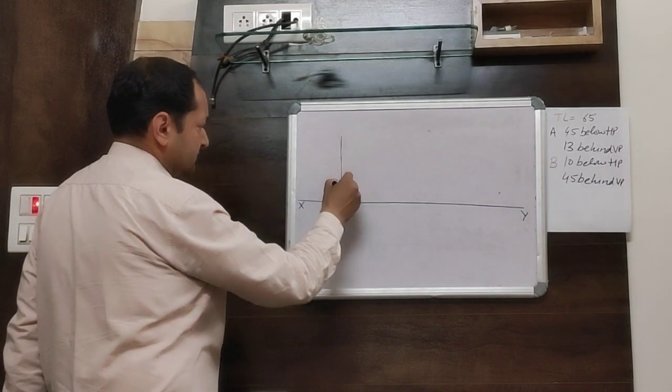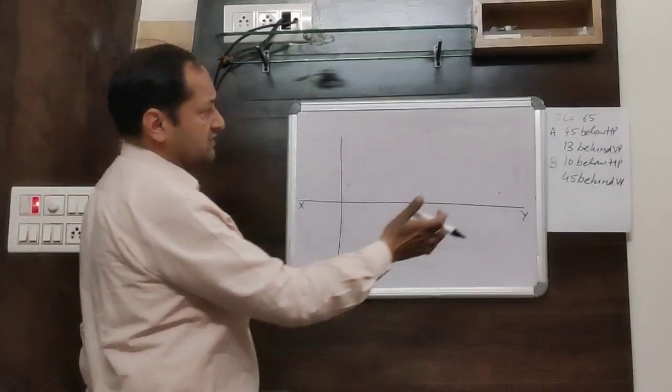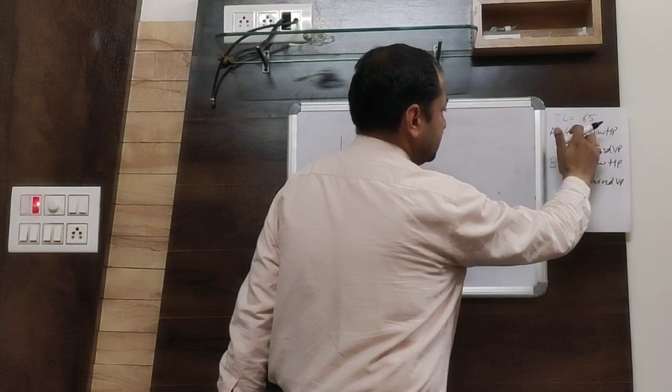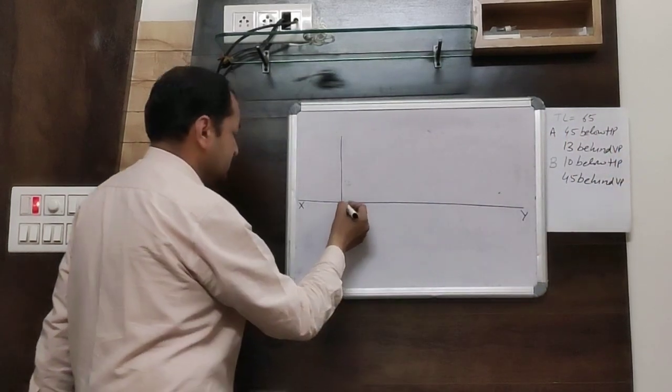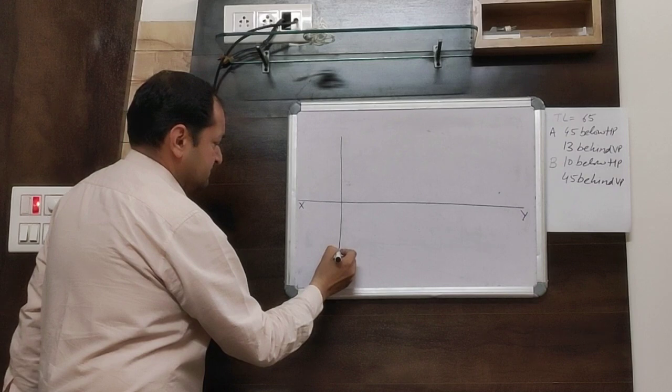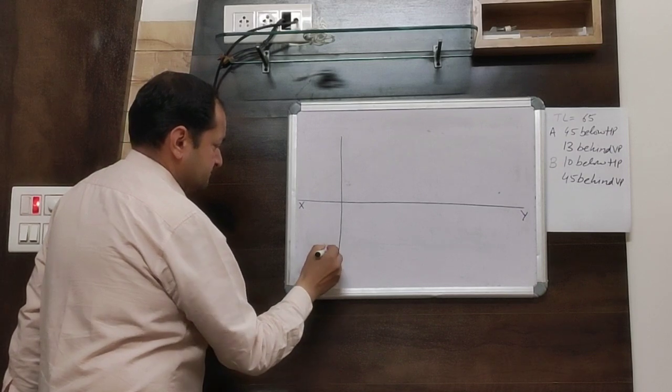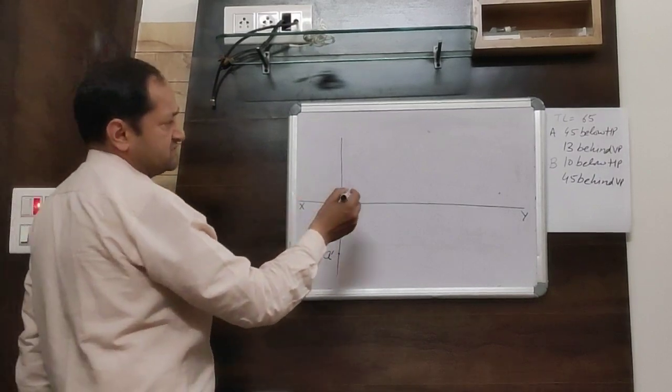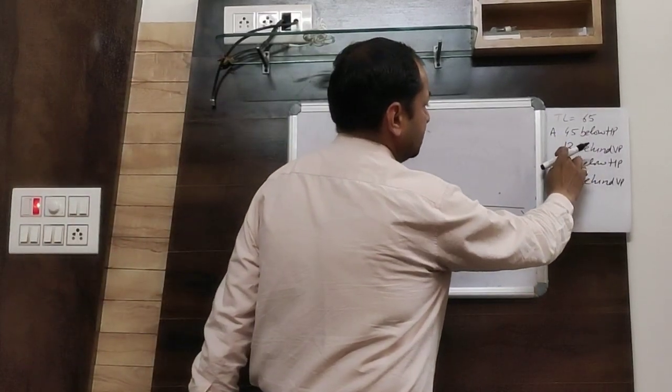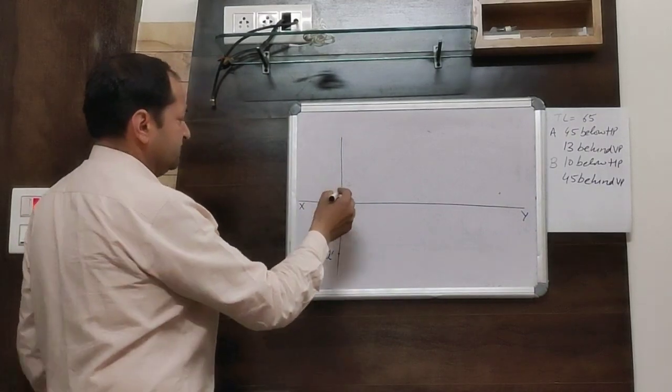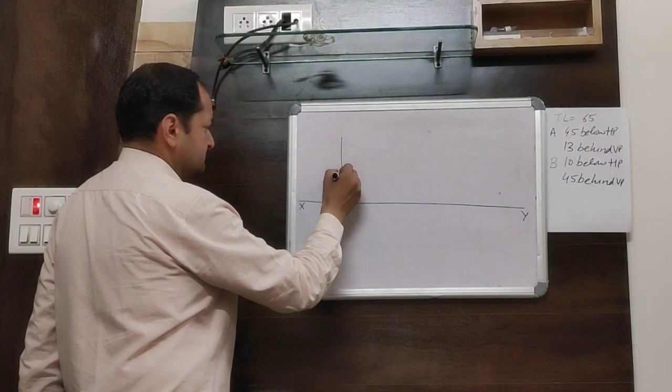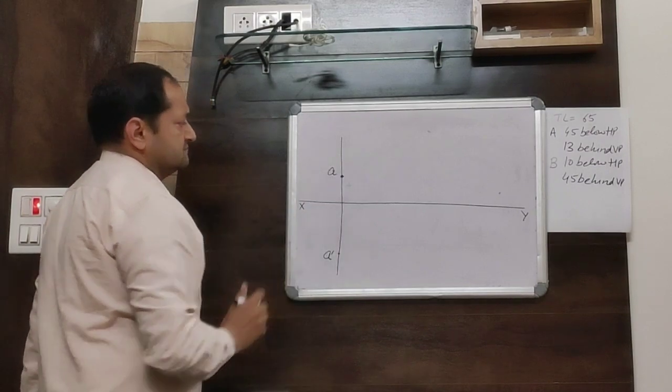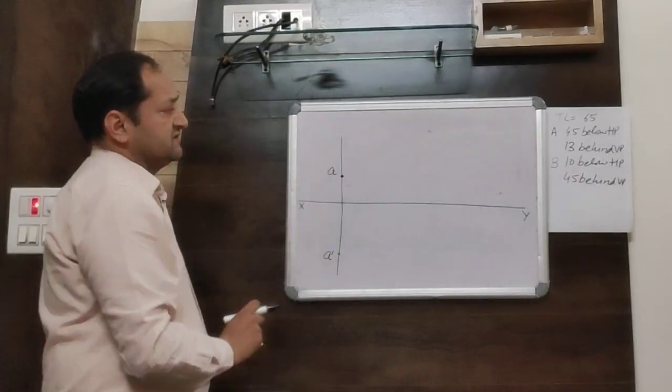Then, draw a projector line, mark the point A. Mark point A at 45mm below HP. Front view is 45mm below HP and 13mm behind VP. Top view is 13mm above the reference line.